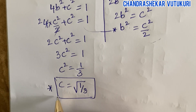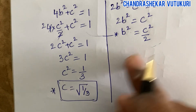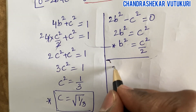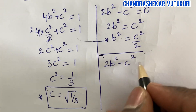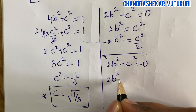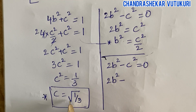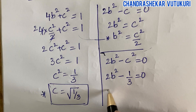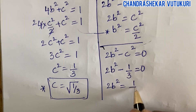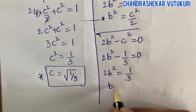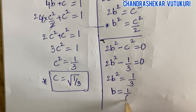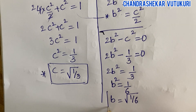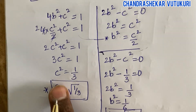Now substituting c² = 1/3 into 2b² minus c² equals zero: 2b² = 1/3, so b² = 1/6, and therefore b = 1/√6. We have now found both b and c.